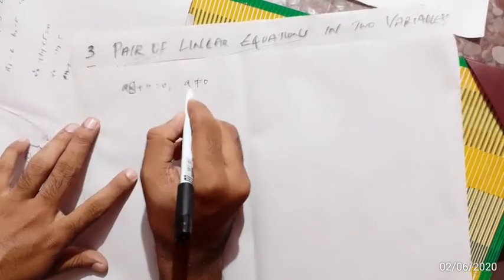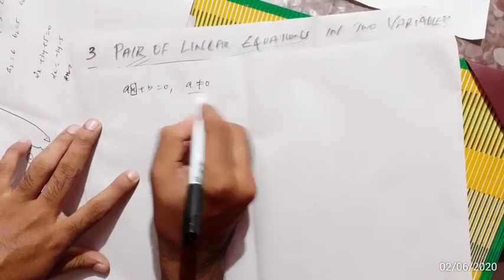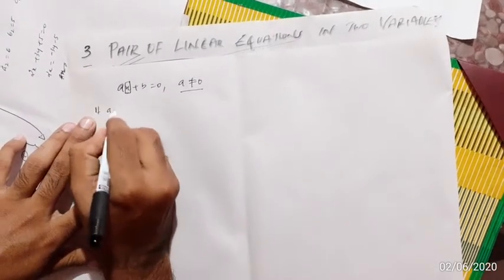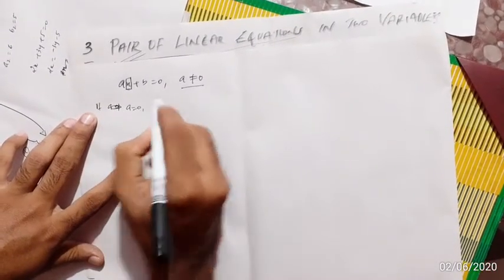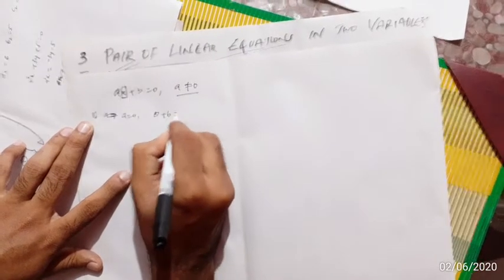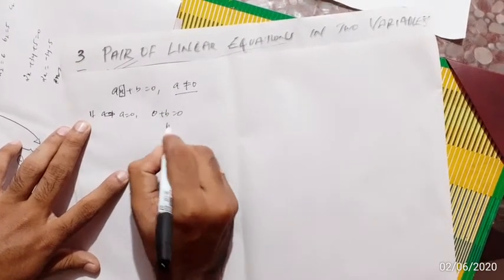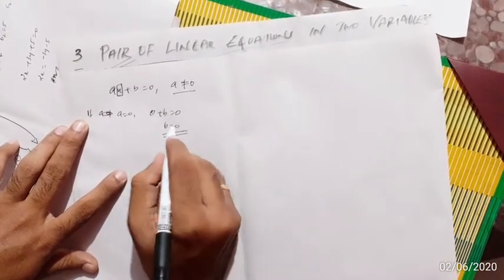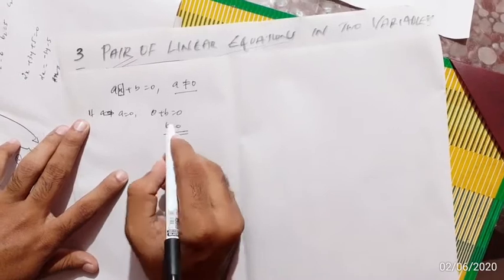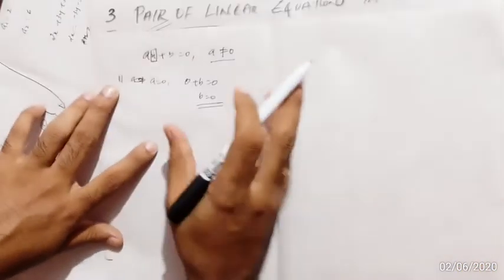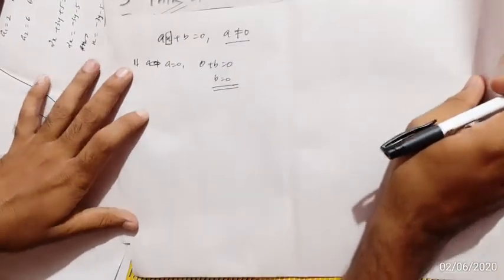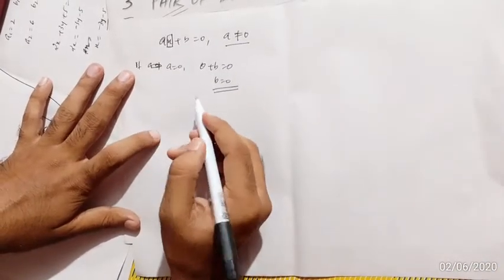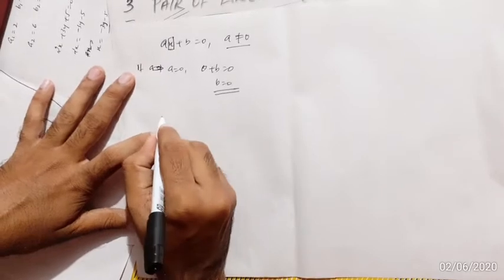The condition is that a ≠ 0. If a = 0, then we get 0 + b = 0, which means b = 0. That is not a linear equation — that is why we require a ≠ 0. That is the general form of a linear equation in one variable. Now we are going to discuss linear equations in two variables.